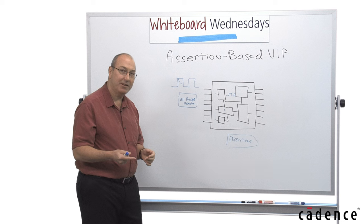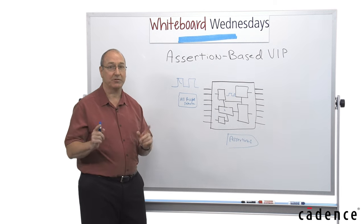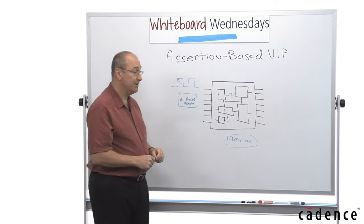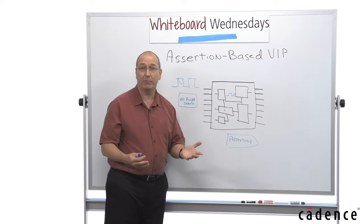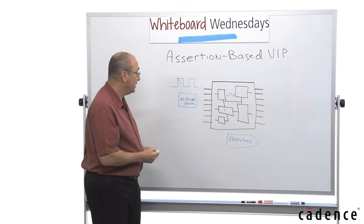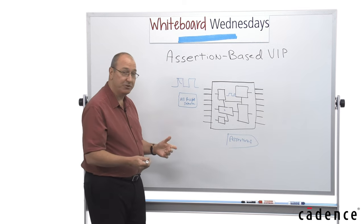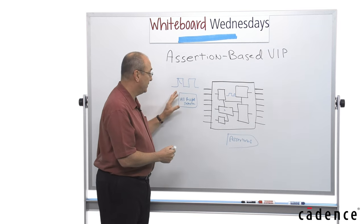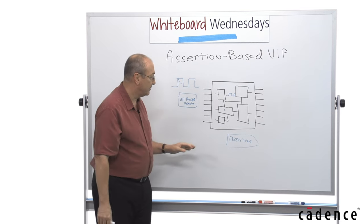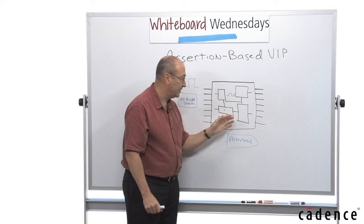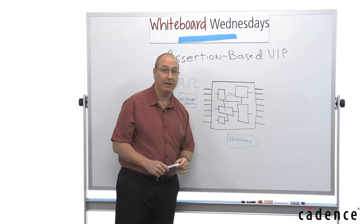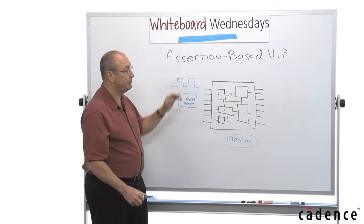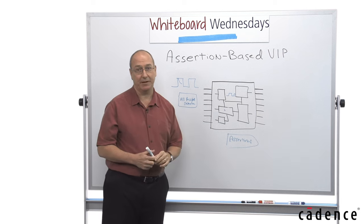Provided it's small enough and provided it's a parallel interface, it works great. So why doesn't everybody use it? Well, it takes some expertise to create the constraints that describe the stimulus and the assertions that describe the behavior of the design. And that is where assertion-based VIP comes in.